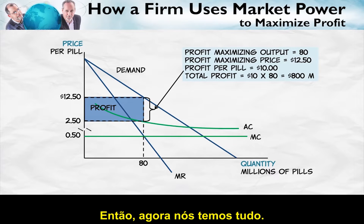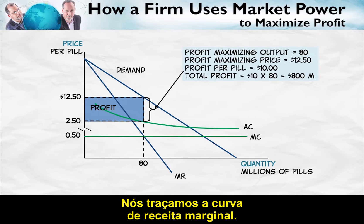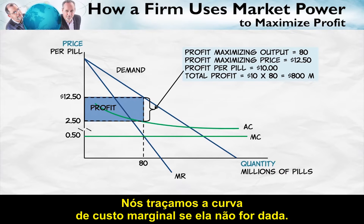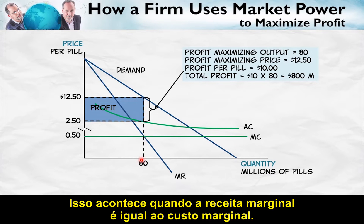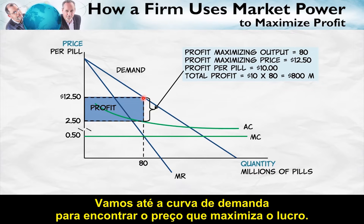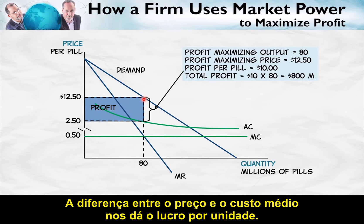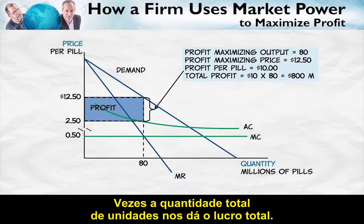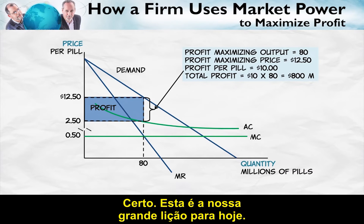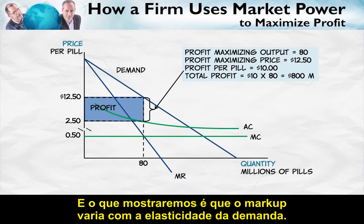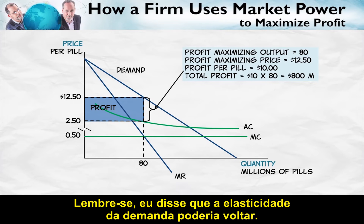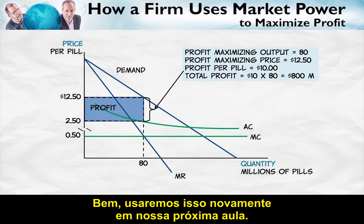Now we've got everything. Whenever we have a monopoly question, we have a demand curve, draw the marginal revenue curve, draw the marginal cost curve, find the profit maximizing output where MR equals MC, go up to the demand curve to find the profit maximizing price, and the difference between price and average cost times total units gives total profit. Next time we'll look at how the markup — the difference between price and marginal cost — varies with the elasticity of demand.